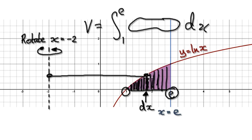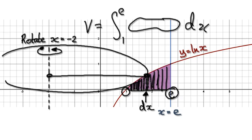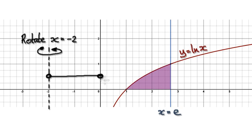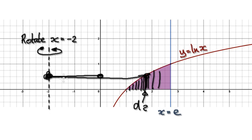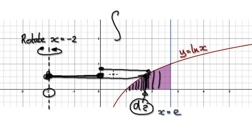We need to know the radius. We can then 2πr it to get a circumference. The radius will be this distance here plus whatever x may be. So from the axis to the shell, the fixed distance is 2, and then from there to x is just x. So our radius is x plus 2.